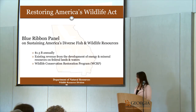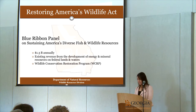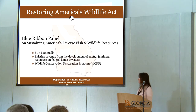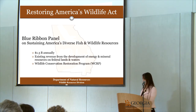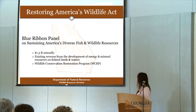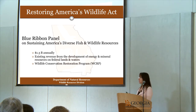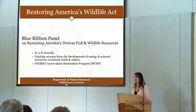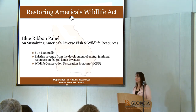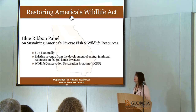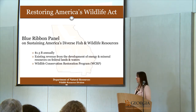There is an effort on the national level to secure dedicated funding for implementing the state wildlife action plans. The Restoring America's Wildlife Act was introduced in the House this year and it calls for dedicating 1.3 billion dollars annually to states through the Wildlife Conservation Restoration Program, or WCRP. Like state wildlife grants, WCRP can't be used specifically for plants, but it can be used on habitat management, vegetation monitoring, and land acquisition.